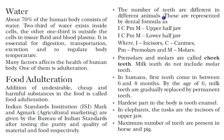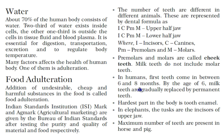The number of teeth differs in different animals and is represented by a dental formula using ICPM: I for incisor, C for canine, PM for premolar, M for molar. Milk teeth do not include molar teeth — they include incisors, canines, and premolars. In humans, the first teeth come in between 6 and 8 months of age.